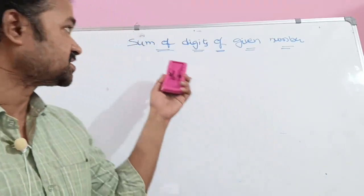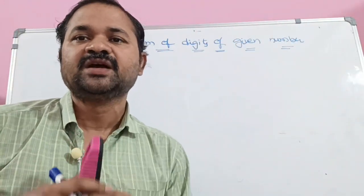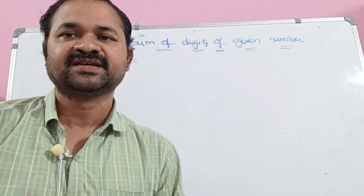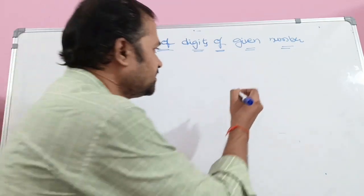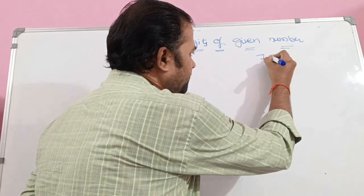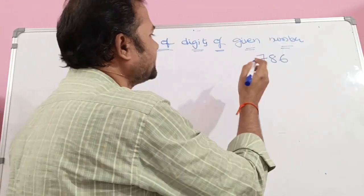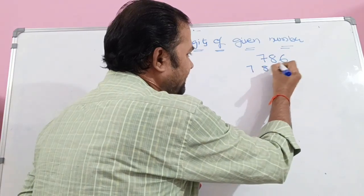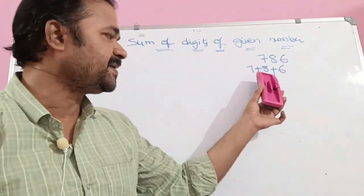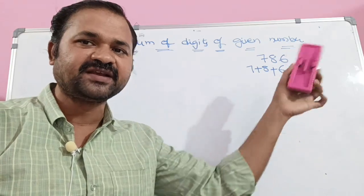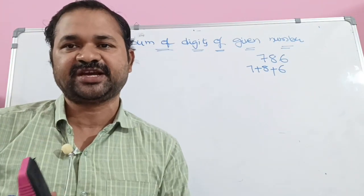We are going to find the sum of digits of a given number using C programming language. Suppose the number is 786. The digits of 786 are 7, 8, 6. We need to calculate the sum of those digits. So 7 plus 8 is 15, 15 plus 6 is 21. So 21 is the output we need to display.